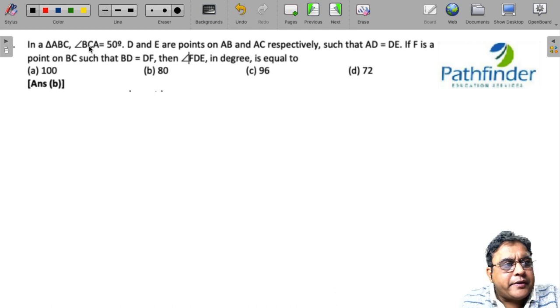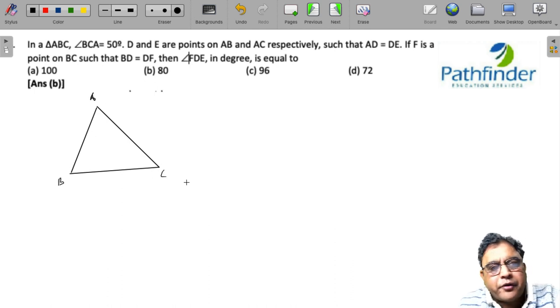In a triangle ABC, angle BCA is equal to 50 degrees. So let us draw. We have a triangle ABC and draw as you read. So it will ensure that you do not have to read it again. So angle BCA, this angle is 50 degrees.